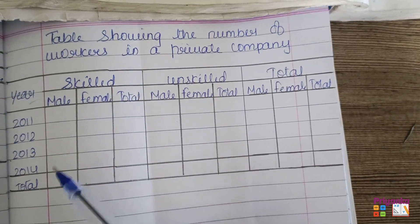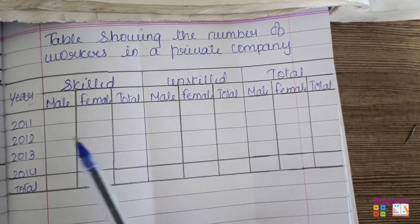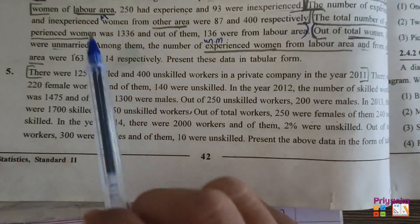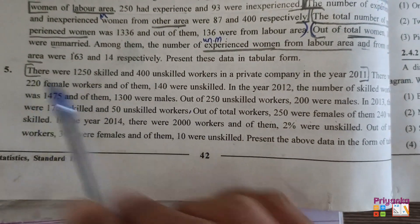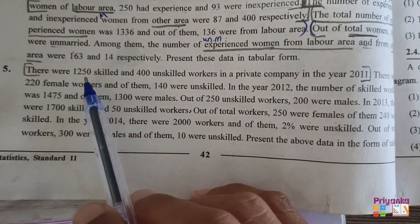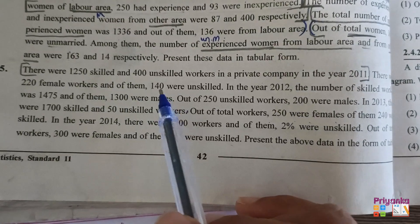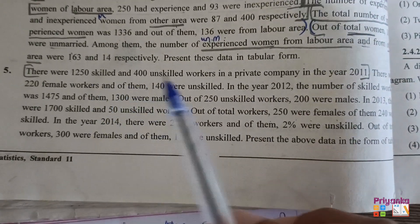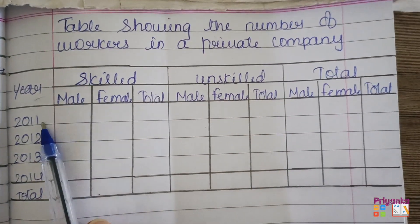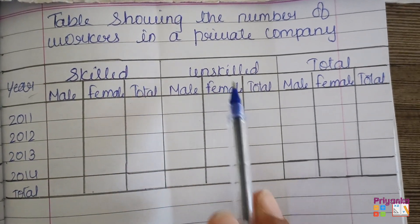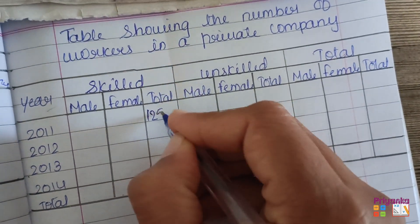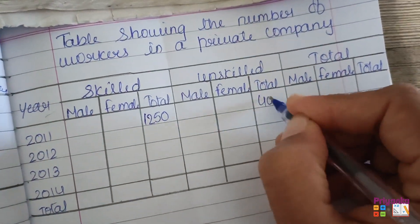All the information is given as per the year. I separate the columns for skilled and unskilled, male, female, and total for each column. After making the table, I read the information properly. There were 1250 skilled and 400 unskilled workers in a private company in the year 2011. So here they are giving us the total of skilled and unskilled workers for 2011. Skilled is 1250 and unskilled are 400 workers.